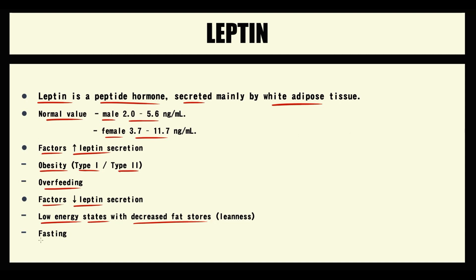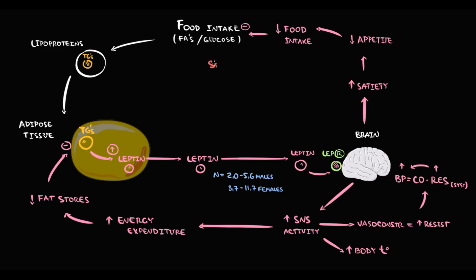The second most common factor that causes low leptin level is fasting. With starvation, food intake decreases, thereby the income of triacylglycerols into the adipose tissue decreases. The lower the amount of triacylglycerols, the lower is the leptin secretion. Thereby, leptin level in the blood will be low.